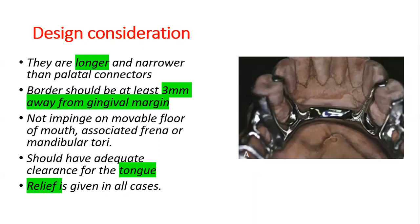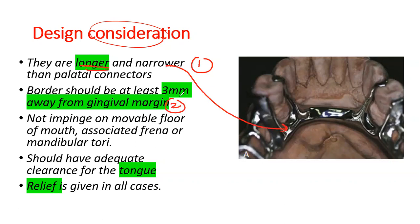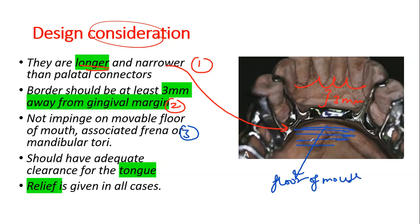Regarding design considerations: mandibular major connectors are longer and narrower than palatal major connectors. There should be a minimum of three mm away from the gingival margin. It should not impinge on the movable floor of the mouth, the associated frena, or the tori. There should be adequate clearance for the tongue, and relief is given in many cases, especially distal extensions.